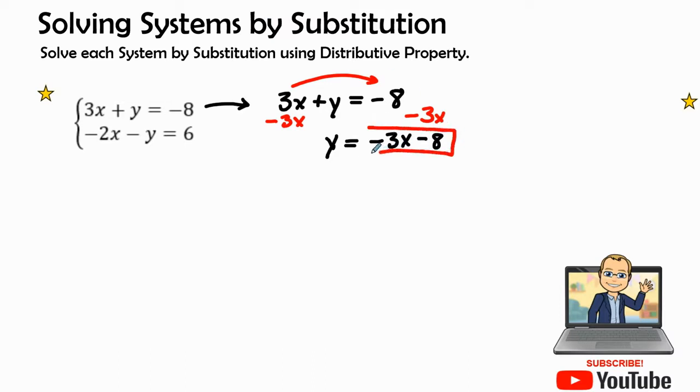This expression is going to be plugged into the other equation. By writing down the other equation -2x - y = 6, I know that wherever I see a y, I'm going to plug it into the y that's in the second equation. We rewrite the equation, leave a parenthesis where the variable should be, and then I will plug in -3x - 8.